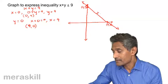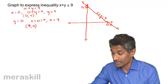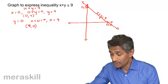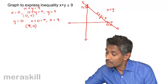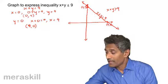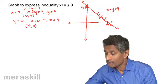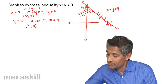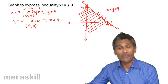We join these two points and get the line x plus y equals 9. But we are interested in the region x plus y less than or equal to 9. The origin side of the line is the region x plus y less than 9, and we also include the line itself. So we shade from the line on the origin side.